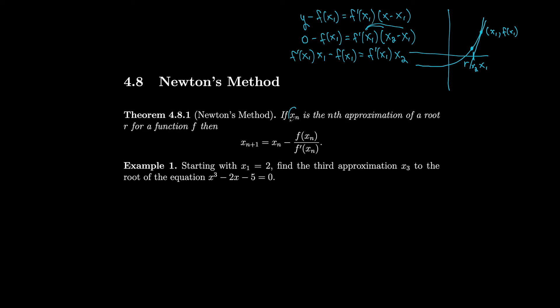We let xₙ be the nth approximation of the root r for a function. Then the next approximation is equal to the previous one minus the y value over the derivative at the previous approximation.